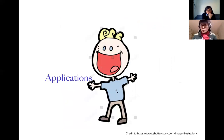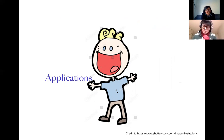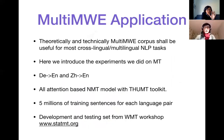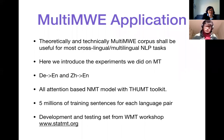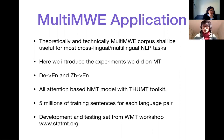I'll briefly introduce the application in translation to show the corpus is useful, though you can apply it to other NLP tasks as well. We applied our corpus to German-English and Chinese-English neural machine translation. The baseline is a full attention-based Transformer model, using a platform from Tsinghua University's machine translation group. The training data is 5 million sentence pairs and the test data is from the WMT workshop.